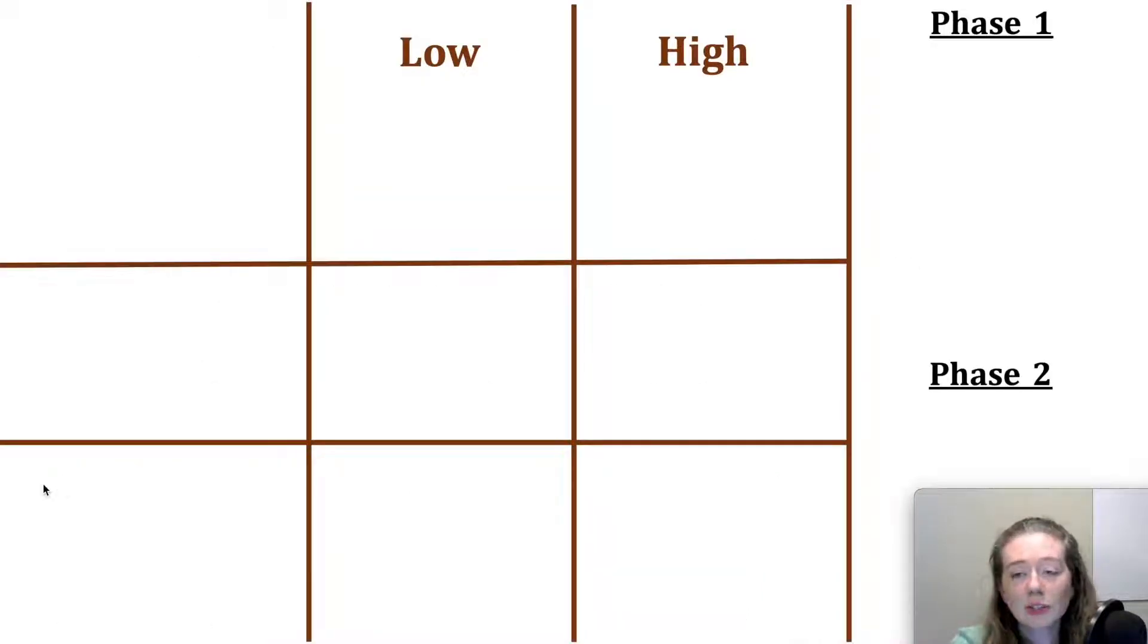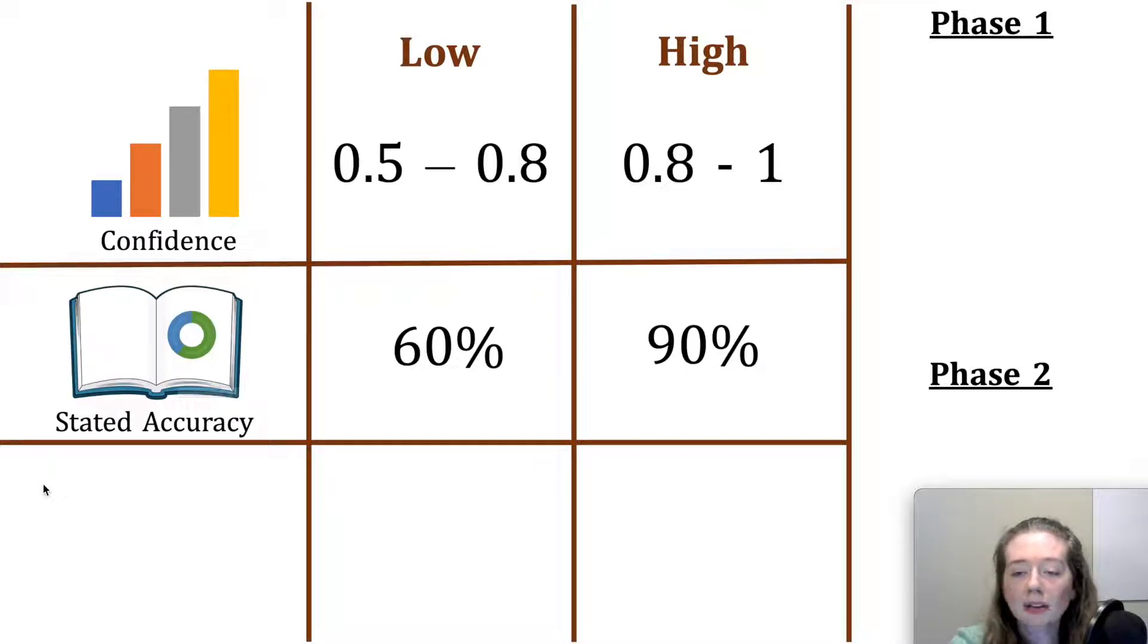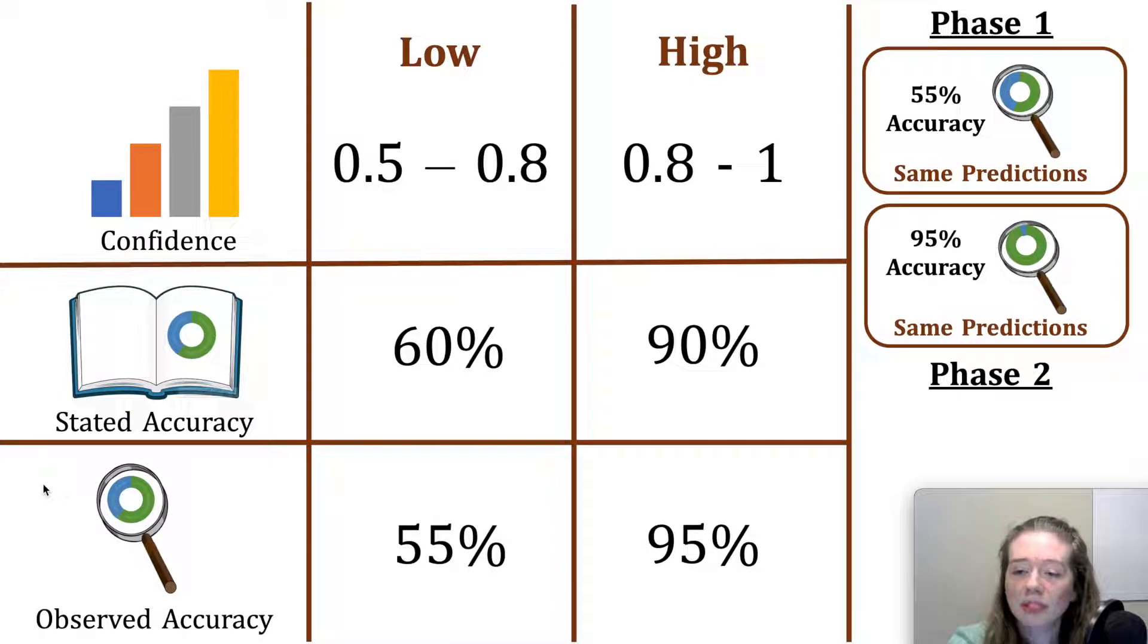We considered a total of 8 experimental treatments with a 2x2x2 design along three factors, each having two levels: the level of confidence that the model associated with its predictions, the model's stated accuracy on held-out data, and the model's observed accuracy on the phase 1 tasks. To minimize differences across treatments, subjects in all 8 treatments saw the same 40 tasks, and in treatments that had the same observed accuracy, the models gave the same binary predictions in phase 1. In phase 2, the models for all 8 treatments gave the same binary predictions.